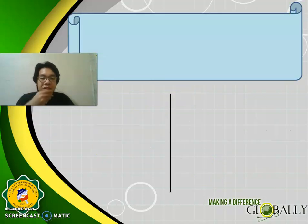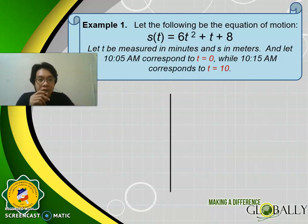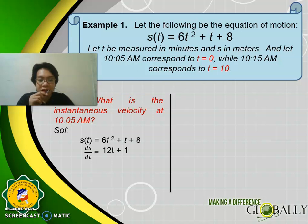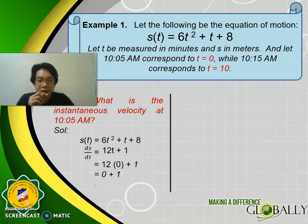Let's have our first example. Let the following be the equation of motion: S = 6T² + T + 8, where T is measured in minutes and S in meters. Let 10:05 AM correspond to T = 0, and 10:15 AM correspond to T = 10. For part A — what is the instantaneous velocity at 10:05 AM? First write the given equation of motion: 6T² + T + 8. Then get its derivative, which becomes 12T + 1. Since 10:05 AM corresponds to T = 0, substitute: 12(0) + 1 = 1. So the answer is 1 meter per minute.